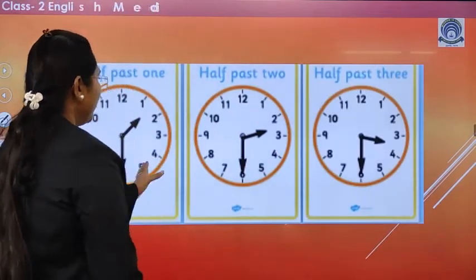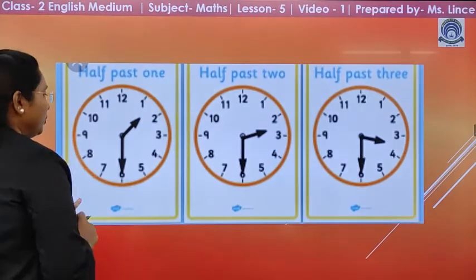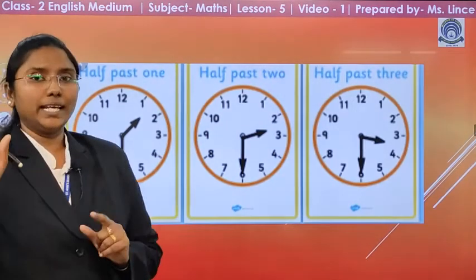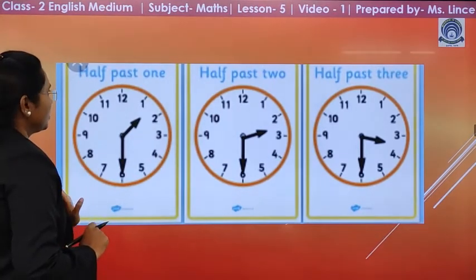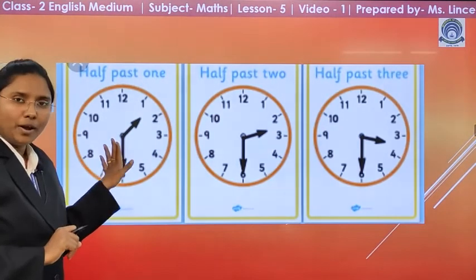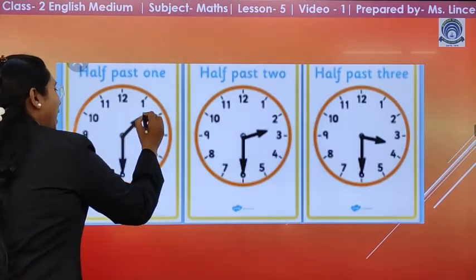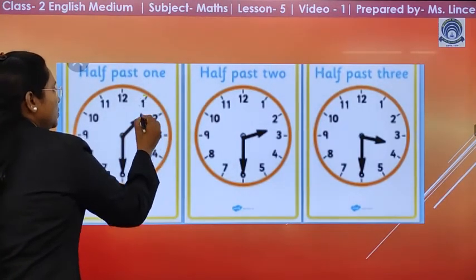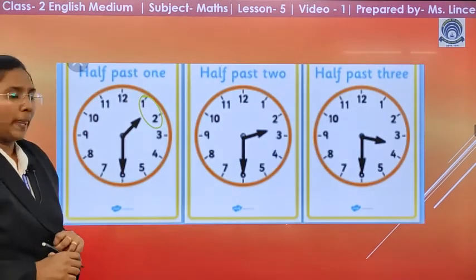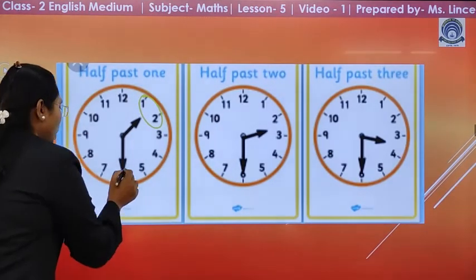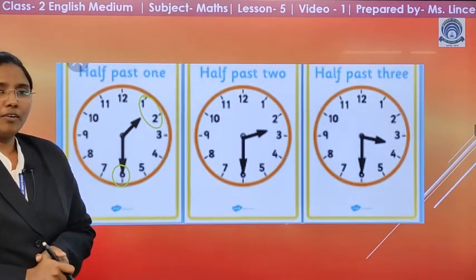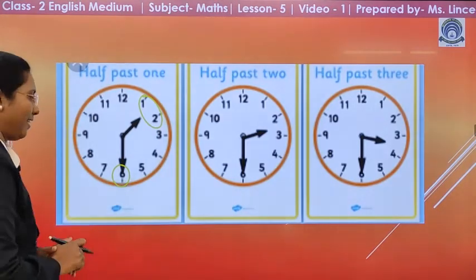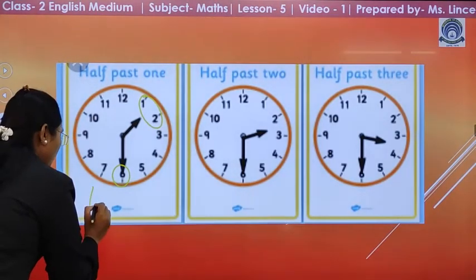Okay, now, few clocks are given and you have to tell me the time. Now, the first clock shows, what is the time now? The hour hand is between 1 and 2 and the minute hand is on 6. So, what is the time now? Yes, very good, Naila. It is 1.30.